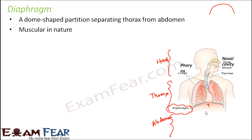Since the diaphragm is muscular in nature, it is capable of contraction and expansion. When it contracts and expands, the diaphragm moves up or down, which changes the internal space of the lungs. The base of the lungs rests on the diaphragm, and since the lungs are elastic, as the diaphragm moves up or down, the space inside the thoracic cavity also changes accordingly.